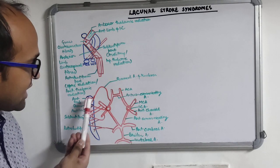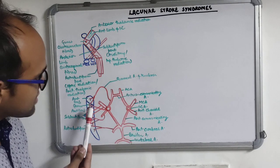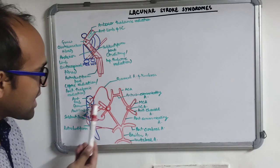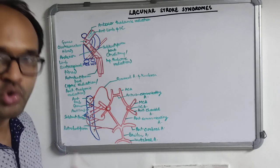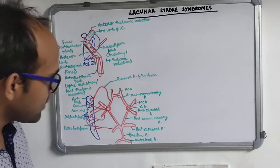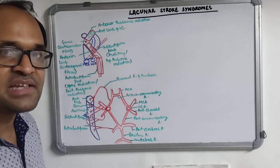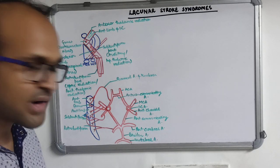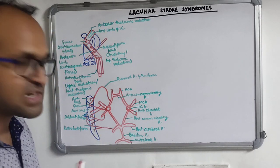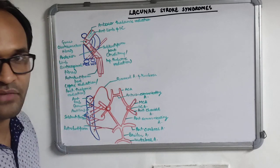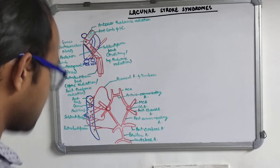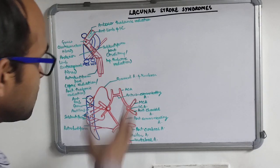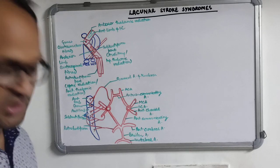To summarize: the recurrent artery of Hübner supplies the anterior limb and genu. The genu also receives blood supply directly from the internal carotid artery. The middle cerebral artery mainly supplies the posterior limb through medial and lateral striate branches. The anterior choroidal artery supplies the posterior limb, retrolentiform part, and sublentiform part. Now we will discuss the consequences of occlusion of these arteries - our topic is lacunar stroke syndrome.